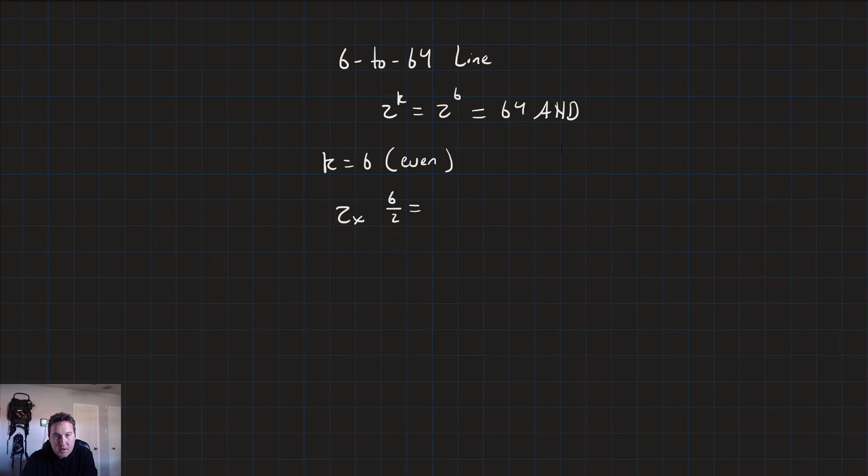So we would just have two times 6 over 2 is 3. So we'd have two 3 to 8 line decoders. So we just have 64 AND gates on the output and two 3 to 8 line decoders.